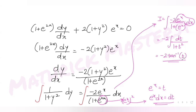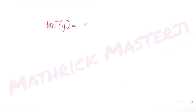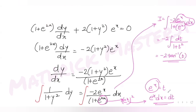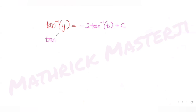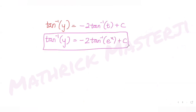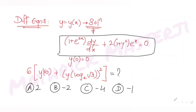Since ∫dt/(1 + t²) = tan⁻¹(t), the result is: tan⁻¹(y) = -2·tan⁻¹(e^x) + C. Now to find the constant C, I use the initial condition y(0) = 0.